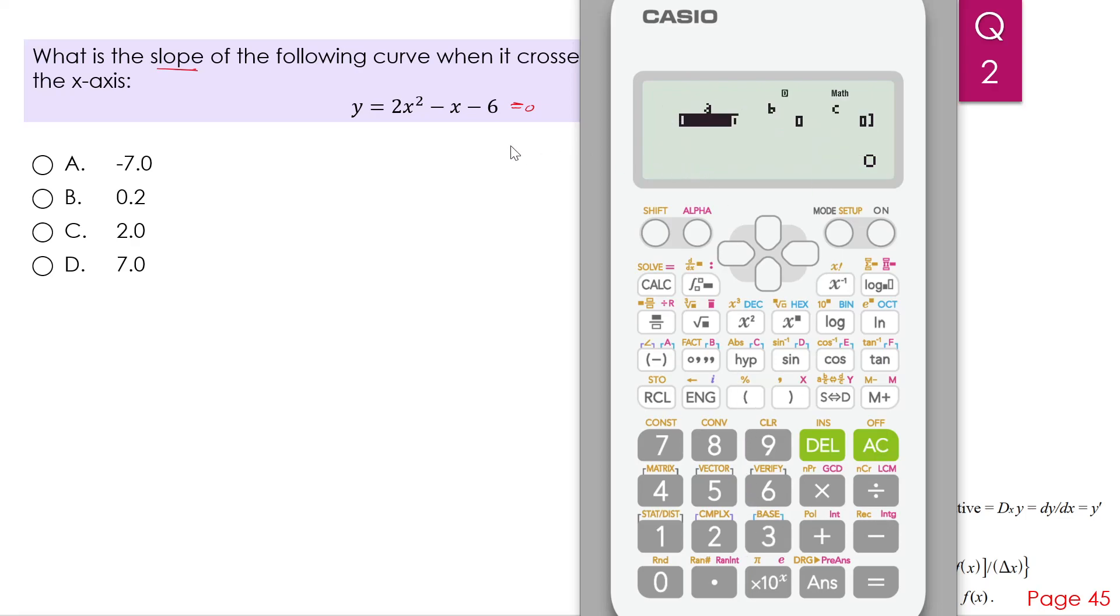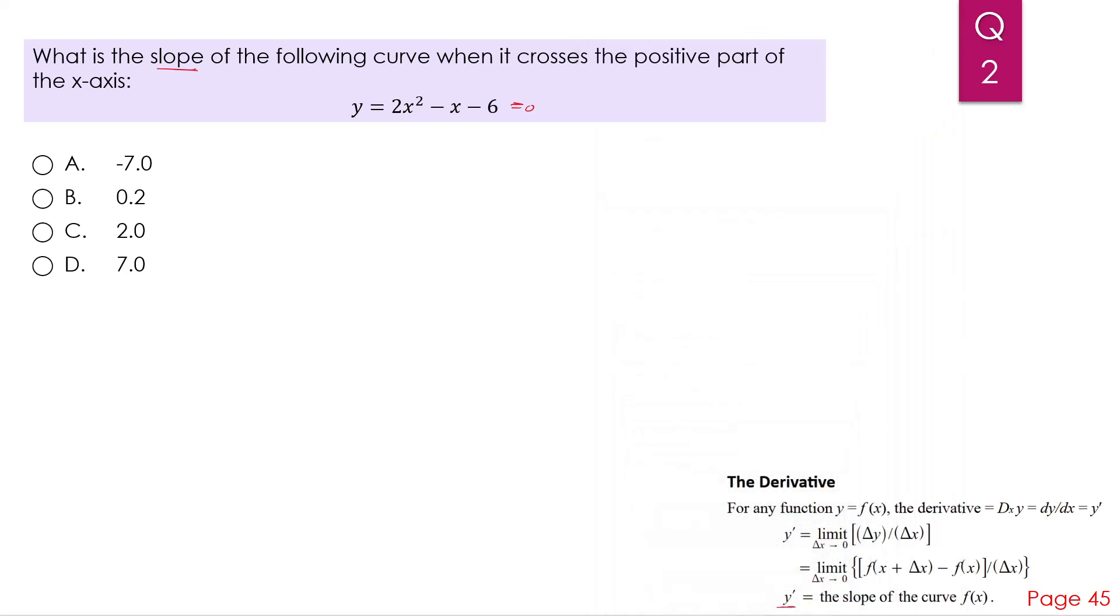Now the coefficient a, which is with x squared is 2. You press equal. With b, it's negative 1. And with c, it's negative 6. You press equal, another equal. So x1 equals 2 and x2 equals negative 1.5.